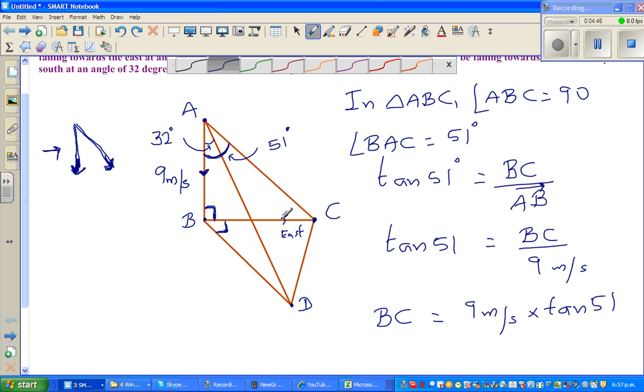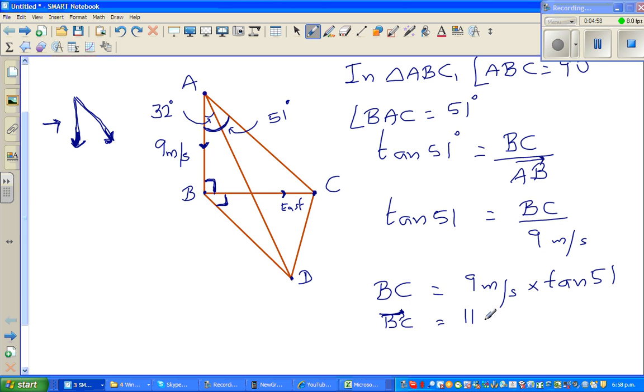BC is also a vector. The magnitude of that vector is 11.1 meters per second. This rain has a vertical and a horizontal component. Any particle which is moving has a vertical and a horizontal. This is the resultant vector, and this is the horizontal part. The horizontal part is 11.1 meters per second. We want to find the velocity of the wind.